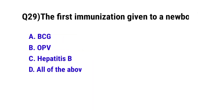Question No. 29: The best immunization given to a newborn is? The correct option is D: All of the above.